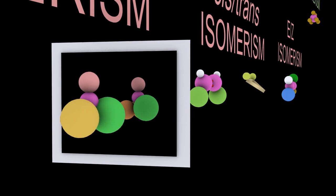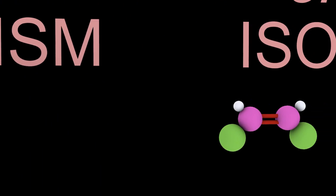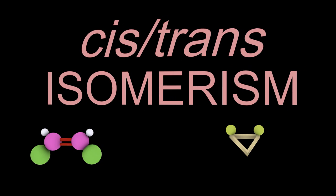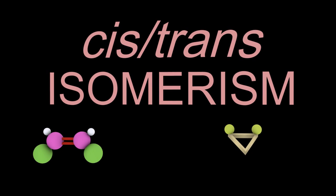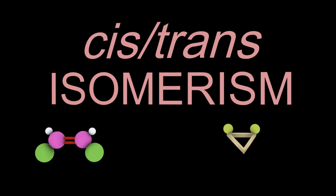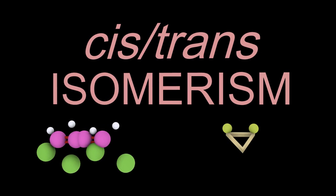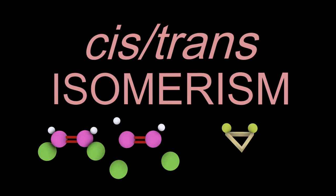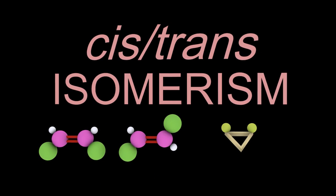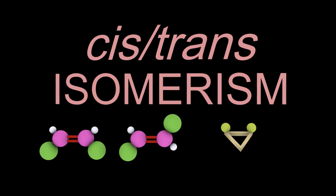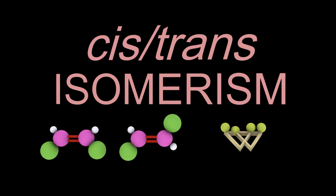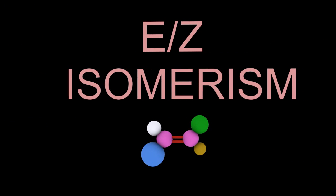After that, we have the cis-trans isomers — two types there. The bond mustn't be able to rotate, so you've locked it with either a double bond between carbons, or using a cyclo-compound, which gives you cis and trans.